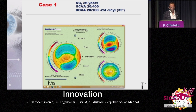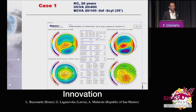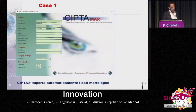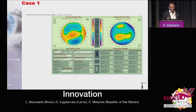Here we have uncorrected acuity and corrected acuity. The pre-op map is this one. This is the printout produced by the device, including a great number of data. The software that allows us to design such a procedure is called the CIPDA, which includes morphological data. This is the printout we may obtain from our project. The goal here is to have as regular a surface as possible and to be as least invasive as possible, so not to remove too much tissue.